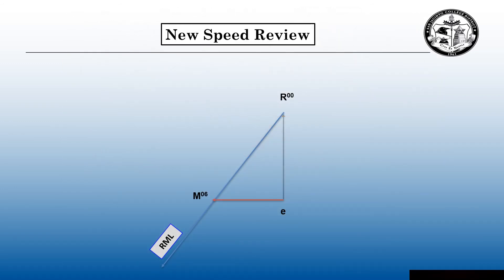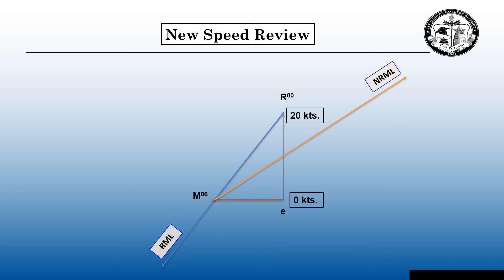Here's the new speed review. We're going to parallel our new relative motion line from MX to M06. Instead of stabbing E and swinging R to find a new course, we're going to find the intersection between our speed vector and the new relative motion line. Remember, E is zero knots and R is 20 knots in our example. Wherever the intersection is between our speed vector and that new relative motion line is going to be our R prime, and we can slow to that speed. Just measure the distance between zero knots to the intersection, take that distance to the 12-mile scale, and you will know what speed to slow down to when the contact reaches the execution point.